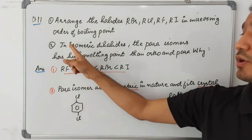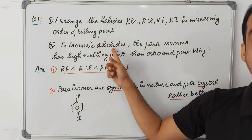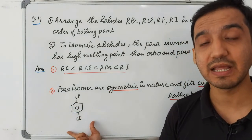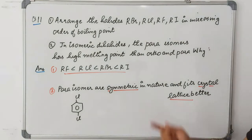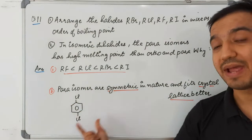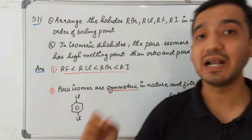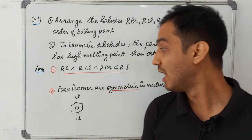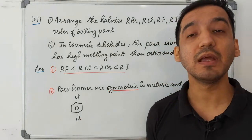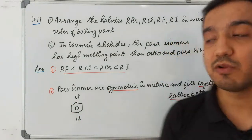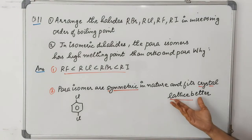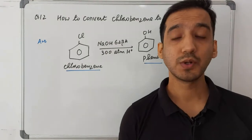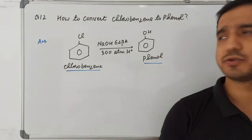Part two: in isomeric dihalides, para isomers have higher melting points than ortho or meta isomers. The para isomer is more symmetrical in nature compared to ortho and meta, so it fits better in a crystalline lattice. Because it is more symmetrical in the crystal, the para form is more stable and has a higher melting point.